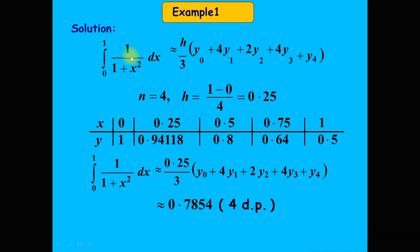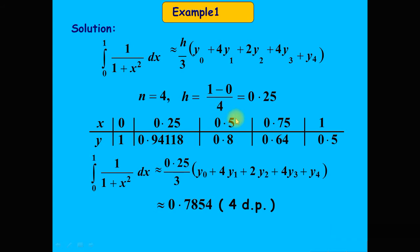The first value of x is 0. Putting x = 0 into y = 1/(1 + x²) gives y₀ = 1. Adding the step size gives x = 0.25. Putting x = 0.25 into the function gives y₁ = 0.9412.